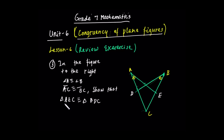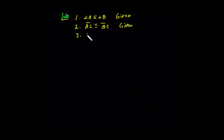Angle C is common to both triangle AEC and triangle BDC — it is the common angle for both triangles. So angle ACE and angle BCD are congruent. Angle ACD is congruent to angle BCD — common angle for the two triangles.